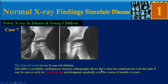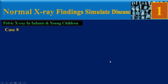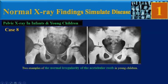Case 7: the femoral notch in two nine-year-old children. This defect is probably cartilaginous because arthrography shows it does not communicate with the joint. It may be seen as early as four years of age and generally resolves over the course of months or years. Another example shows double femoral head notches on the left side in a nine-year-old child.